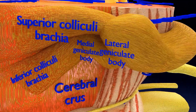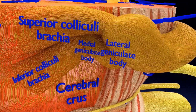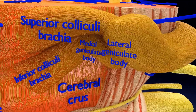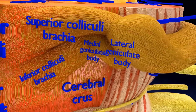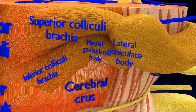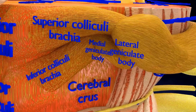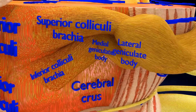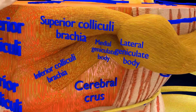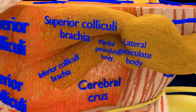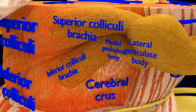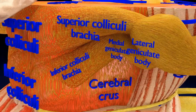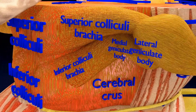The superior colliculus receives visual information from both eyes and other pathways, making it a major center for initiating eye movements and coordinating them with movements of the head and neck.